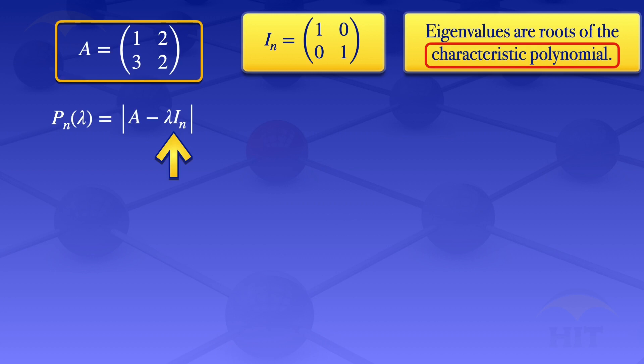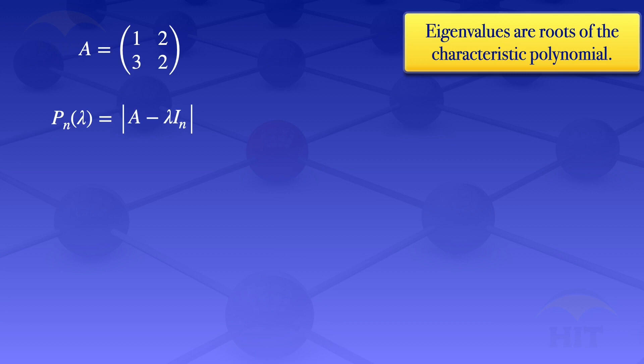In the formula for the characteristic polynomial, we are multiplying that identity matrix I_N by lambda, so we will have a lambda on the diagonal. We are subtracting a matrix with lambdas on the diagonal from matrix A, which results in subtracting lambda from the elements on the diagonal of A. Our result becomes the determinant of [1 minus lambda, 2; 3, 2 minus lambda].